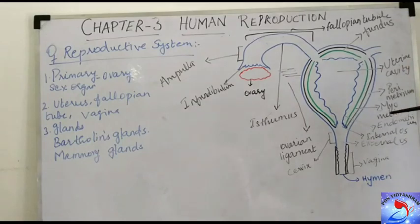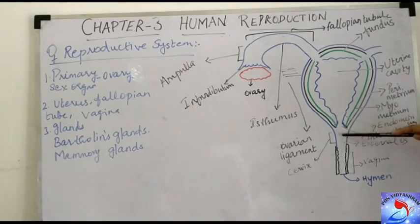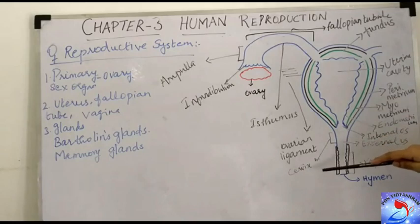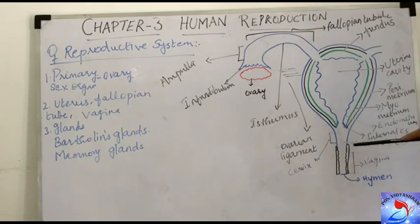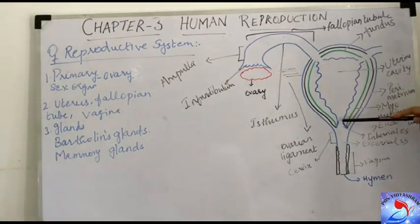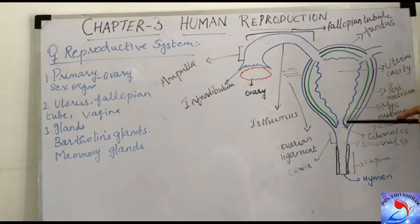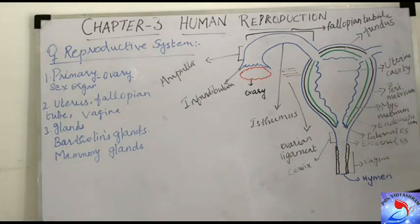The three layers of the uterus open out into a narrow tube called the cervix. The cervix has two openings: the internal os and the external os — os meaning orifice, so internal orifice and external orifice. The cervix serves as a tract during reproduction through which the offspring is expelled, and it opens into the external genitalia, which is the vagina.